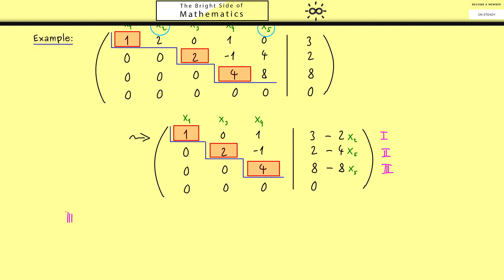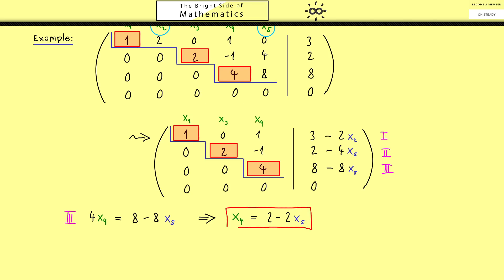We get the solutions by backward substitution, starting at the bottom and going upwards. The first equation reads 4 times x4 equals 8 minus 8x5. To keep things clear, let's mark the free variables in a different color. We simply divide by 4 to get x4. We have solved for x4 in terms of numbers and free variables only. Since x5 is a free variable — it can be any real number — different choices of x5 give different values for x4.